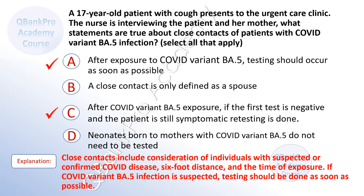Close contacts include consideration of individuals with suspected or confirmed COVID disease, within a 6-foot distance, and the time of exposure. If COVID variant BA5 infection is suspected, testing should be done as soon as possible.